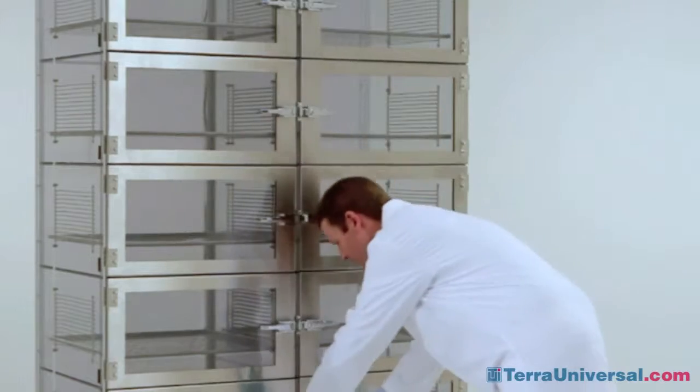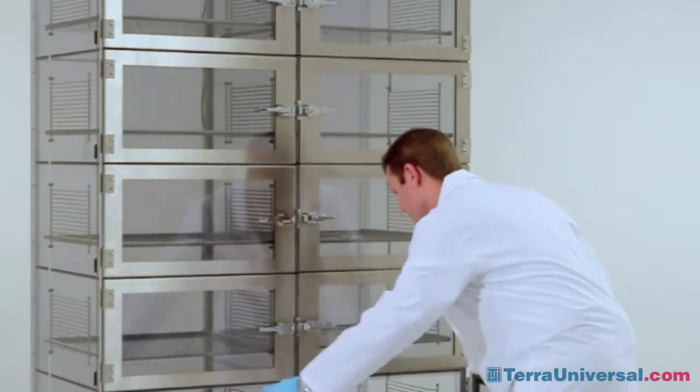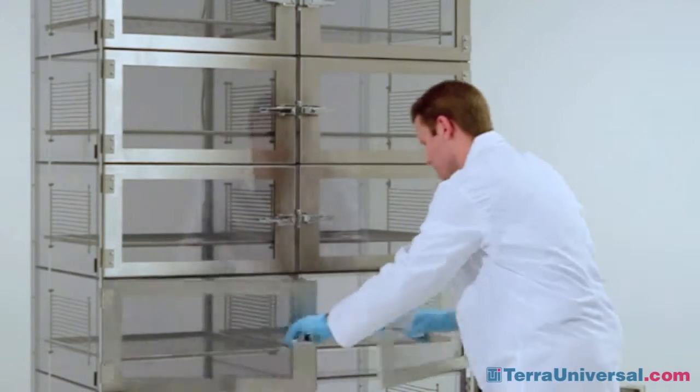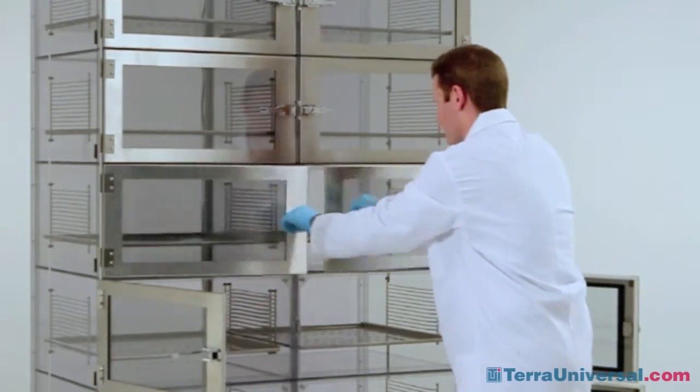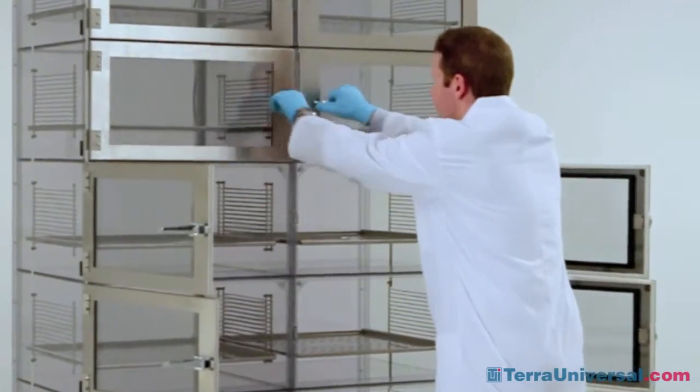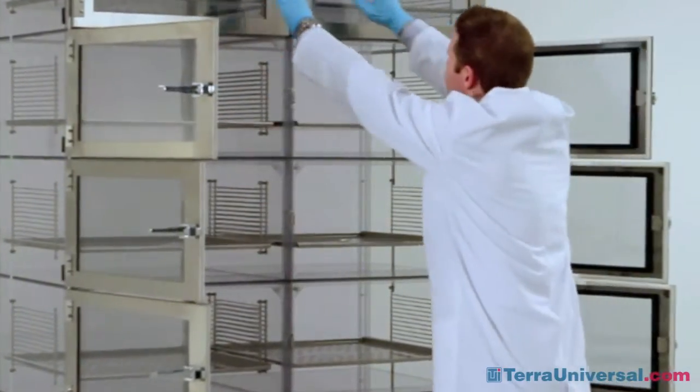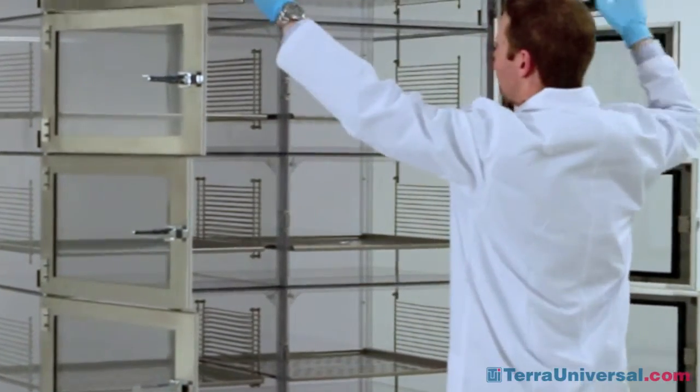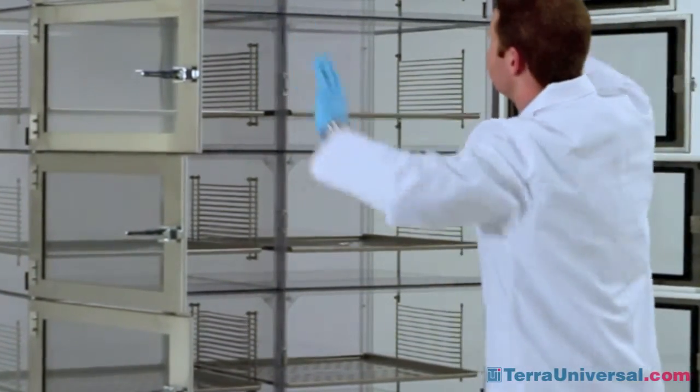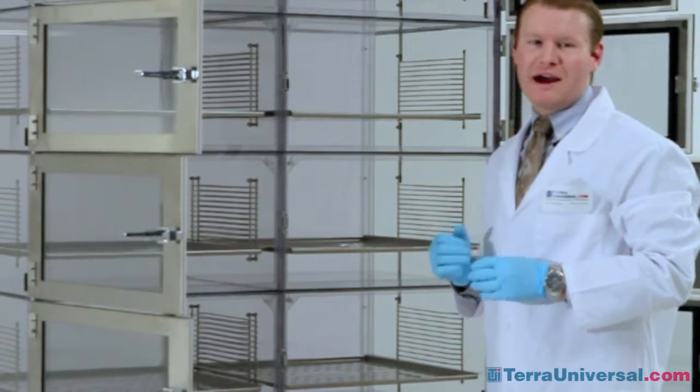First thing I will do is open each of the doors, beginning at the bottom. At this point you don't want to have your dual purge running or any type of nitrogen running into the chamber.